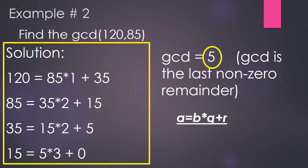Let's have example number 2: find the GCD of 120 and 85. We will use the same statement: A equals B times the quotient plus the remainder. So, A equals 120 and B equals 85. Step 1: 120 divided by 85 gives quotient 1 with remainder 35. The new value of A is 85 and the new value of B is 35. So, 85 divided by 35 gives quotient 2 with remainder 15.